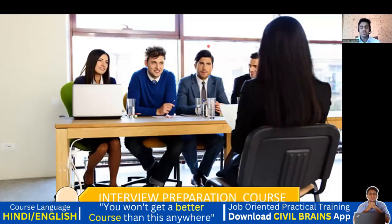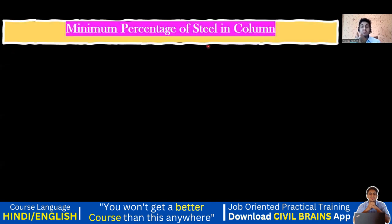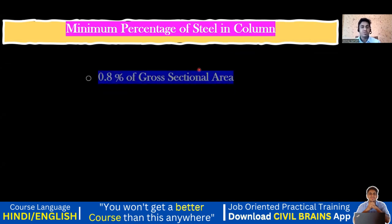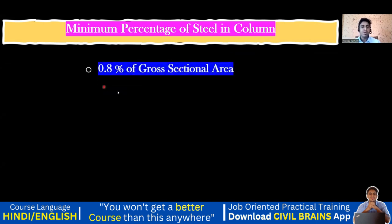Welcome back. In this lecture, we'll cover the minimum percentage of steel you put in a column. We already understood the minimum diameter of bar and the minimum number of bars. Now, how much steel you're supposed to provide — it is 0.8 percent of the gross sectional area. Remember the term: 0.8 percent of gross sectional area.